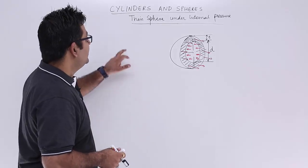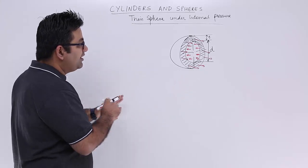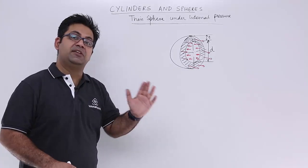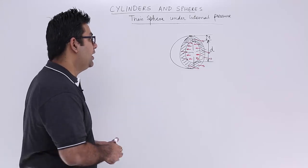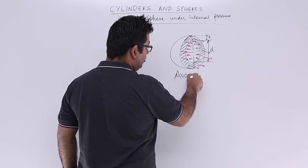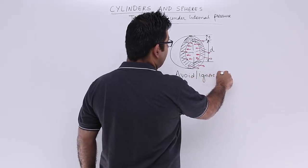Now let's talk about a thin spherical shell under internal pressure. The difference of a thin spherical shell in comparison to the thin cylinder is that in this we avoid or we ignore the radial stress.